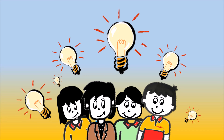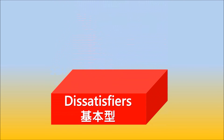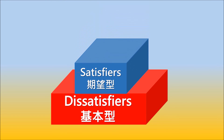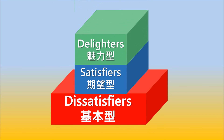Now you can think about how to categorize your customer needs as satisfiers, dissatisfiers, or waste. Based on the idea of going from good to great, you should make sure dissatisfiers are well addressed, continue strengthening satisfiers, and try to develop your own delighters.